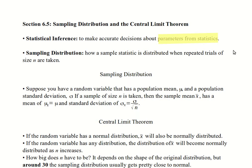So from that population, we take samples of size n, and we want to talk about the variance within those samples. So sampling distribution, suppose you have a random variable that has a population mean of mu and a population standard deviation of sigma. If a sample of size n is taken, then the sample mean has a mean. The mean of the sample means is the population mean, and the standard deviation of the sample means is the population standard deviation divided by the square root of n.